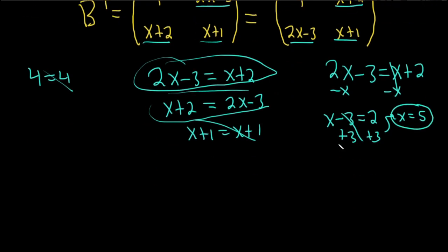Now we just need B. So recall B was 4, x+2, 2x-3, and x+1. So all we have to do to find B now is take the 5 and plug it in. So this is 4. 5+2 is 7. Just plug in the 5.